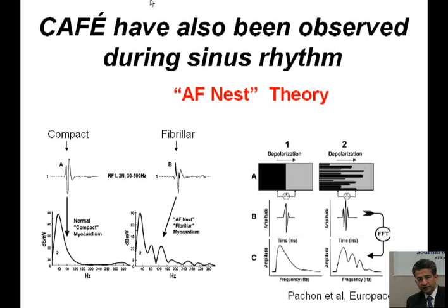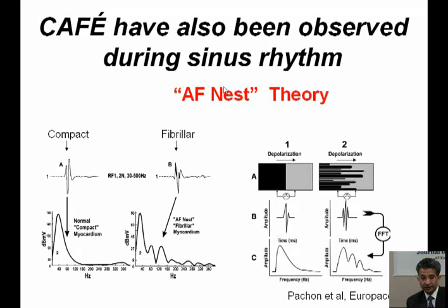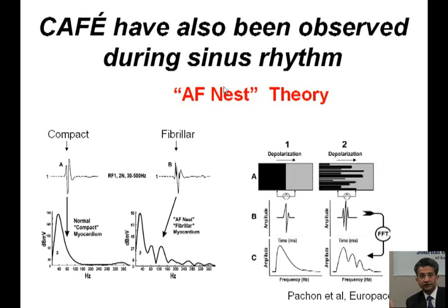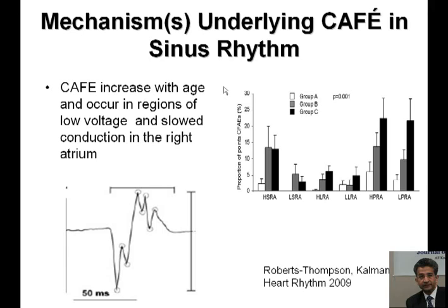Dr. Pachon reported data from a case series of about 30 to 40 patients, noting that certain locations had sinus rhythm electrograms with multiple components. He performed fast Fourier transforms of the signal at locations with and without multi-component signals. In spots where electrograms were fractionated, he found a dominant frequency plus several harmonics — multiple peaks in the frequency plot. He called this pattern 'fibrillar conduction,' hypothesizing it represents a mechanism that sustains atrial fibrillation.